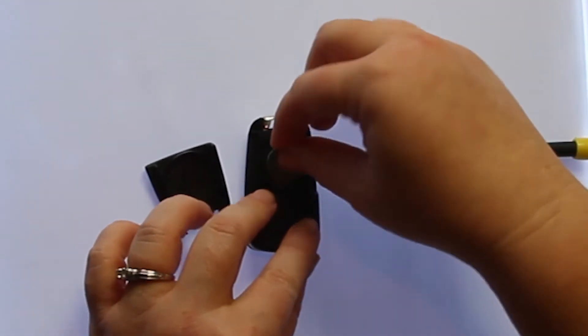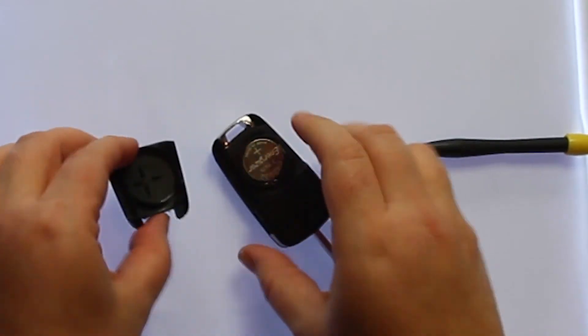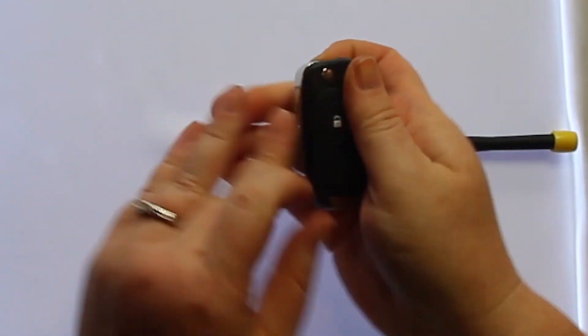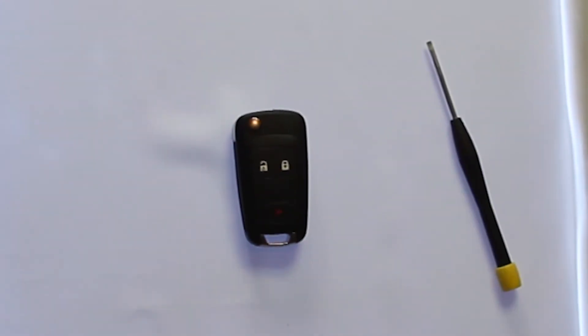Once you have the old battery out, to replace it simply slide the new battery back into place, snap the back of the key fob back on, close the key, and you're done.